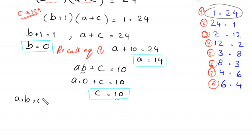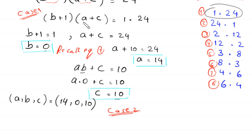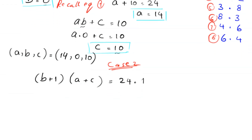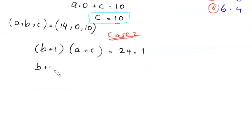From case 1, a = 14, b = 0, c = 10. So (a, b, c) = (14, 0, 10). Now we solve case 2. In case 2, we write (b + 1)(a + c) = 24×1. So b + 1 = 24 and a + c = 1, giving b = 23 and a = 1 − c.